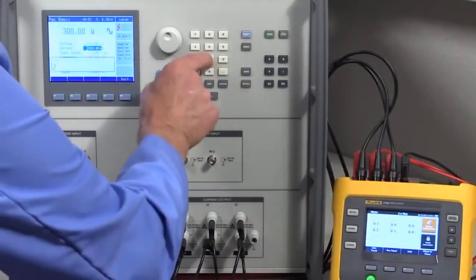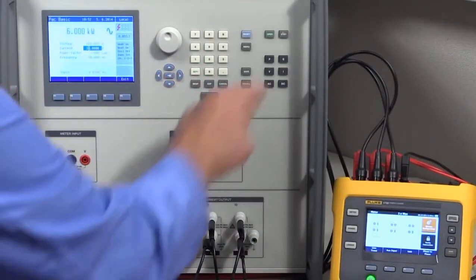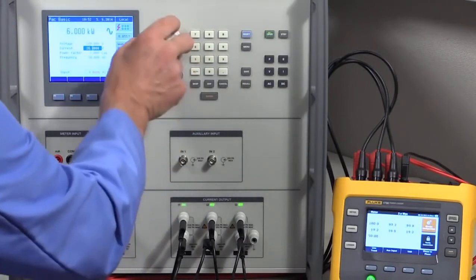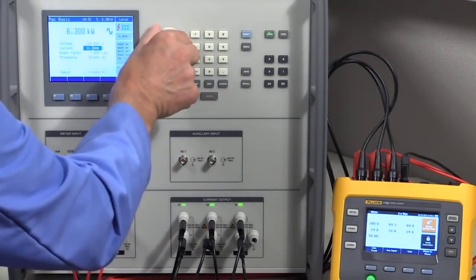With its versatile sourcing functions, the 6003A can supply from one to three phases of AC power and energy at up to 18 kVA per phase.